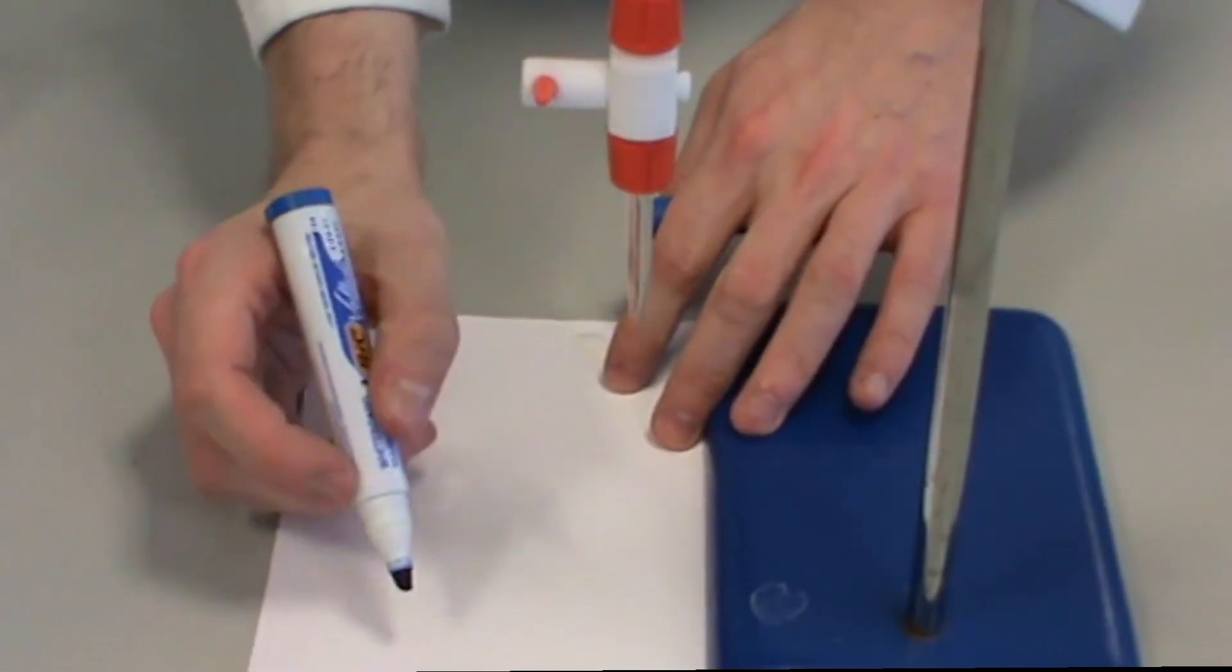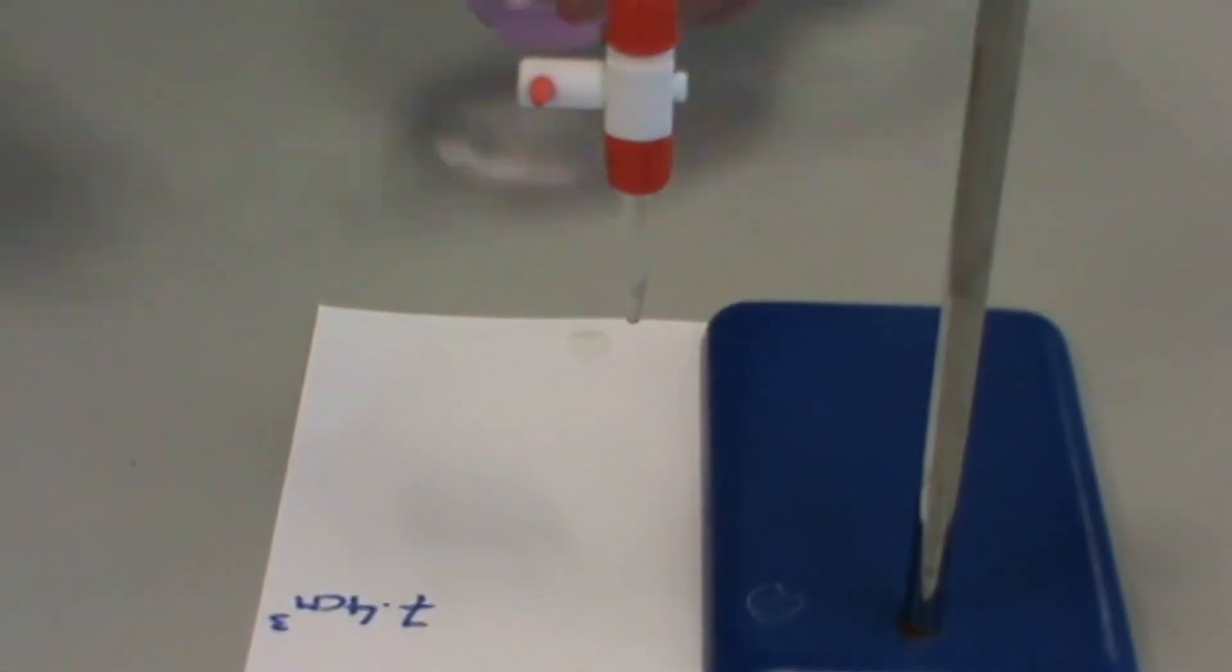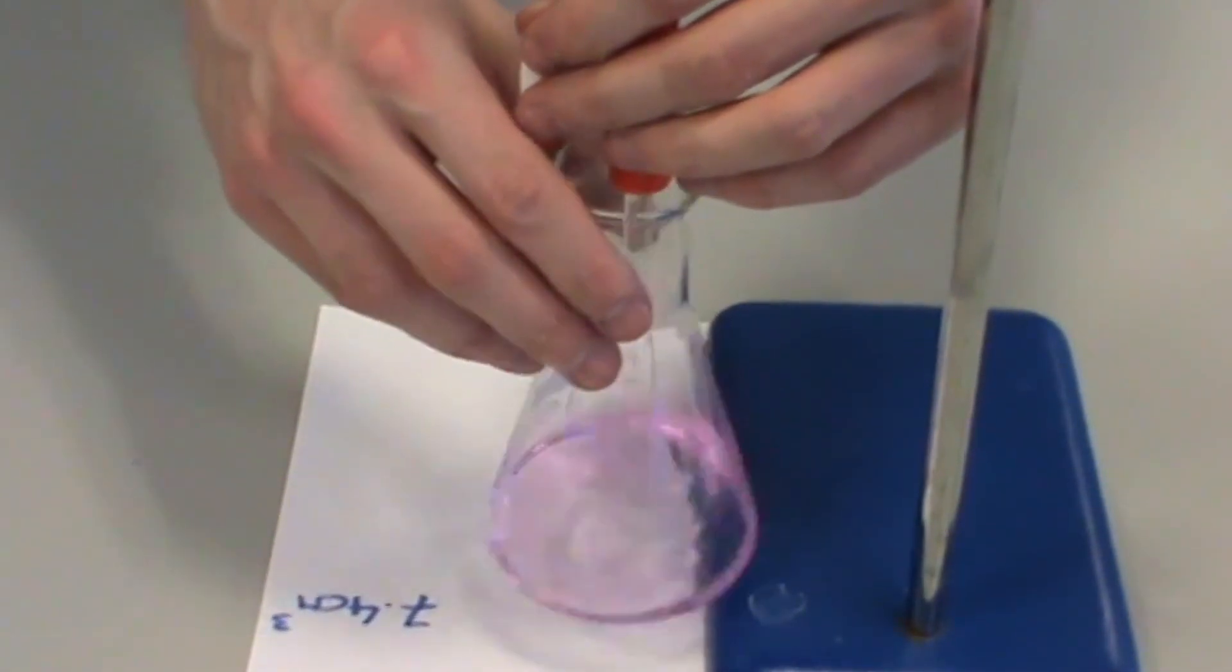A piece of white paper or a white tile is placed below the burette. This will allow you to more easily observe when a colour change occurs. The starting volume on the burette is recorded.